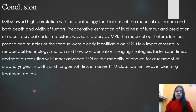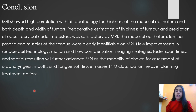To conclude, MRI showed a high correlation with histopathology for thickness of the mucosal epithelium and both depth and width of the tumor. Pre-operative estimation of tumor thickness and prediction of occult cervical nodal metastasis was satisfactory. The mucosal epithelium, lamina propria, and muscles of the tongue were clearly identified on MRI.